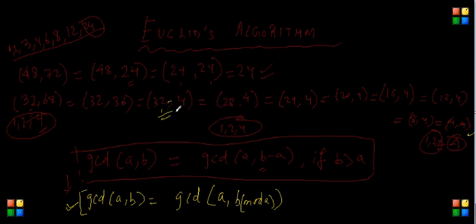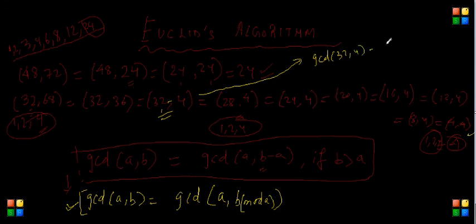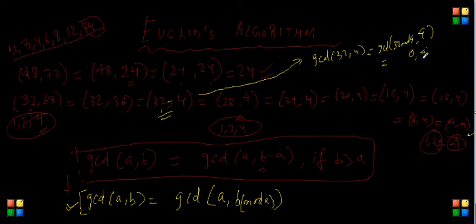Just imagine taking GCD(32, 4): keep the smaller value intact and find the remainder of 32 divided by 4. Since 32 gives a remainder of 0 when divided by 4, we get GCD(4, 0). And the GCD of any number with 0 is the number itself, so the GCD is 4.